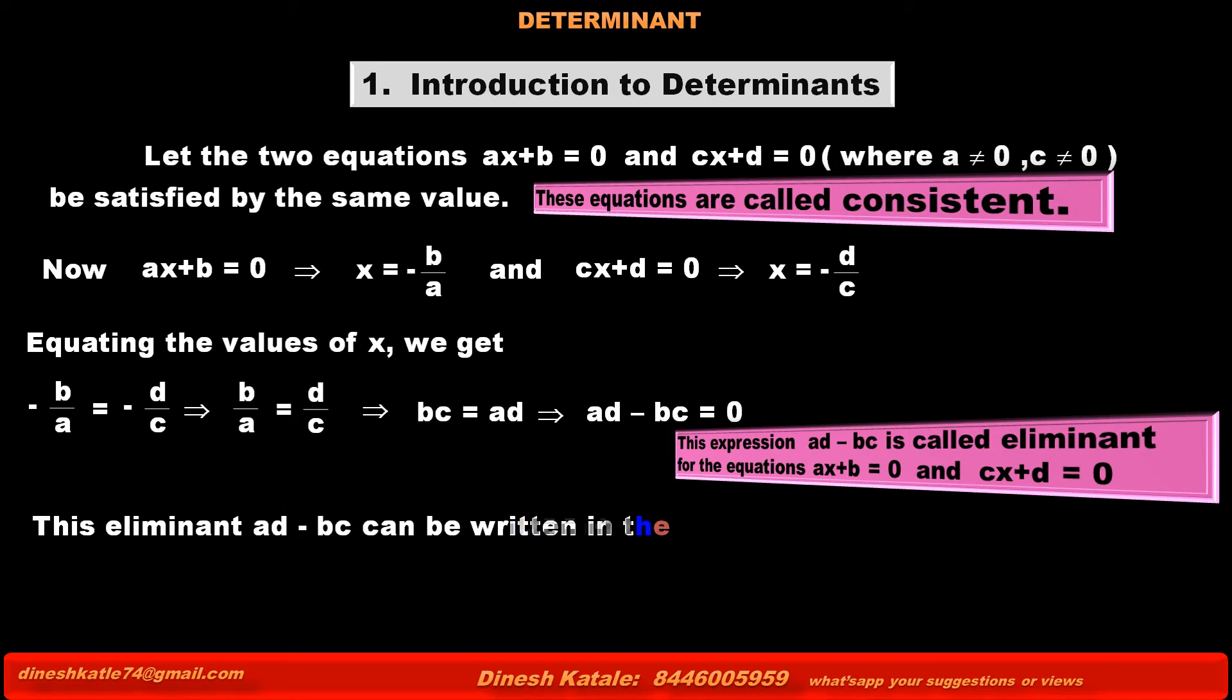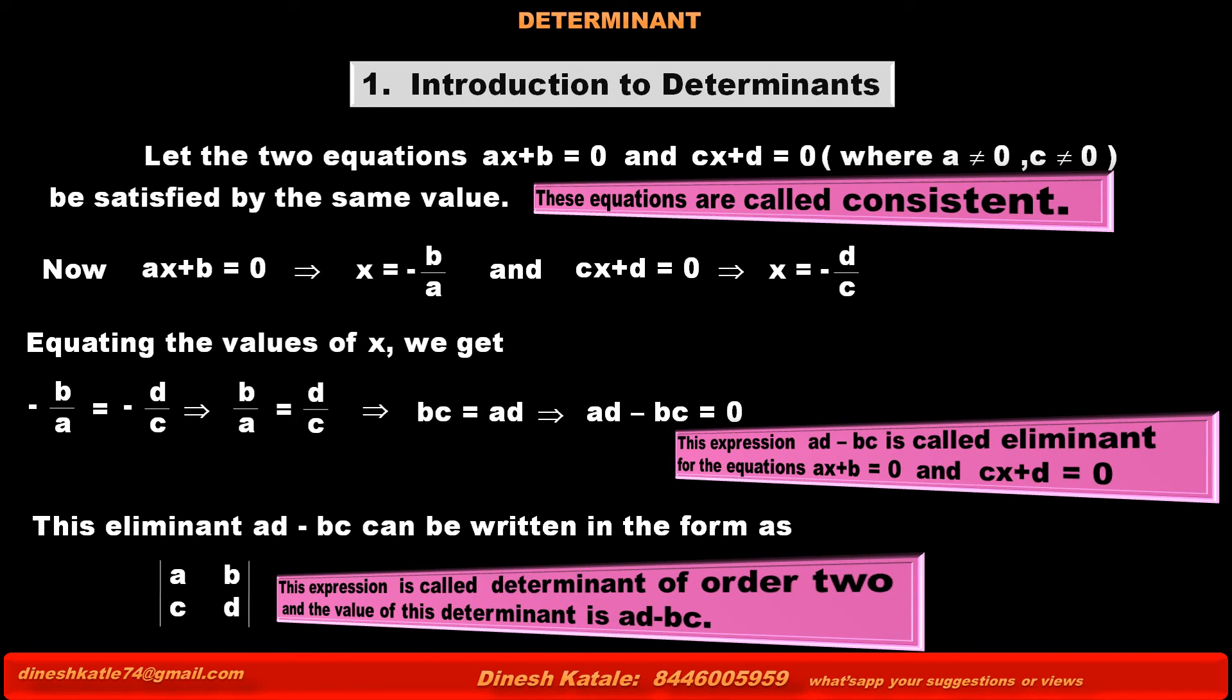This eliminant ad - bc can be written in the form as, between two vertical lines, a, b, c, d, where first column contains coefficient of x and second column contains constant terms of the given two equations. This expression is called determinant of order 2, and the value of this determinant is ad - bc.